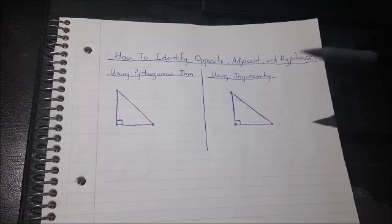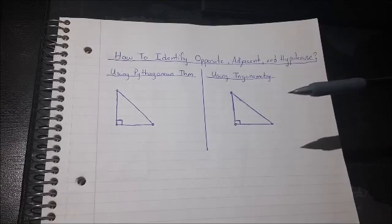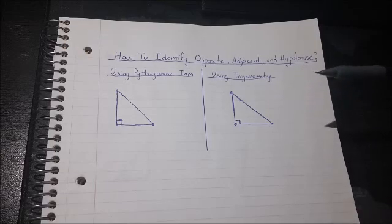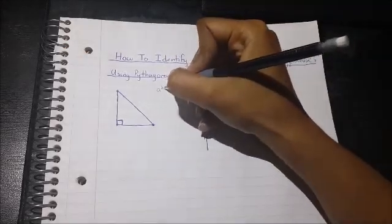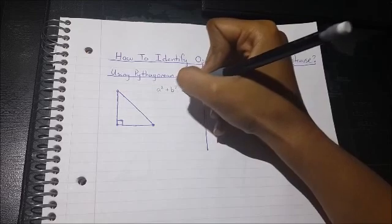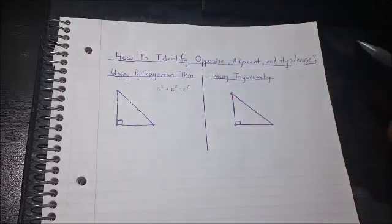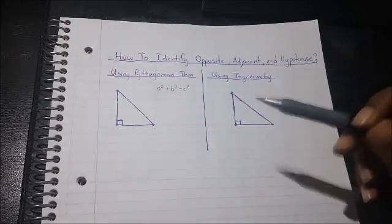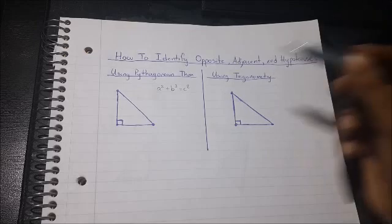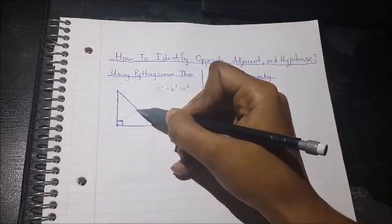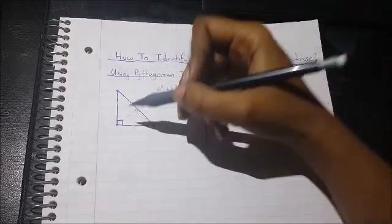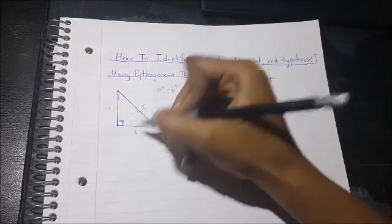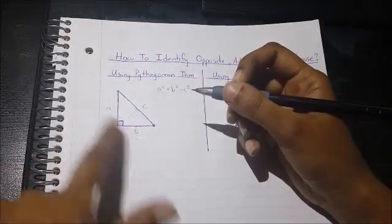Now when we first start to learn about right triangles, we only care about finding out their missing sides. And in order to do that, we would use the Pythagorean theorem, which was a squared plus b squared equals c squared. And then all we had to do was focus on which side is a, b, and c. Now when we first started that, we always identified the side opposite of the right angle as our c side, and the legs of the right triangle as either a or b. It didn't matter if this was b and this was a, or vice versa.